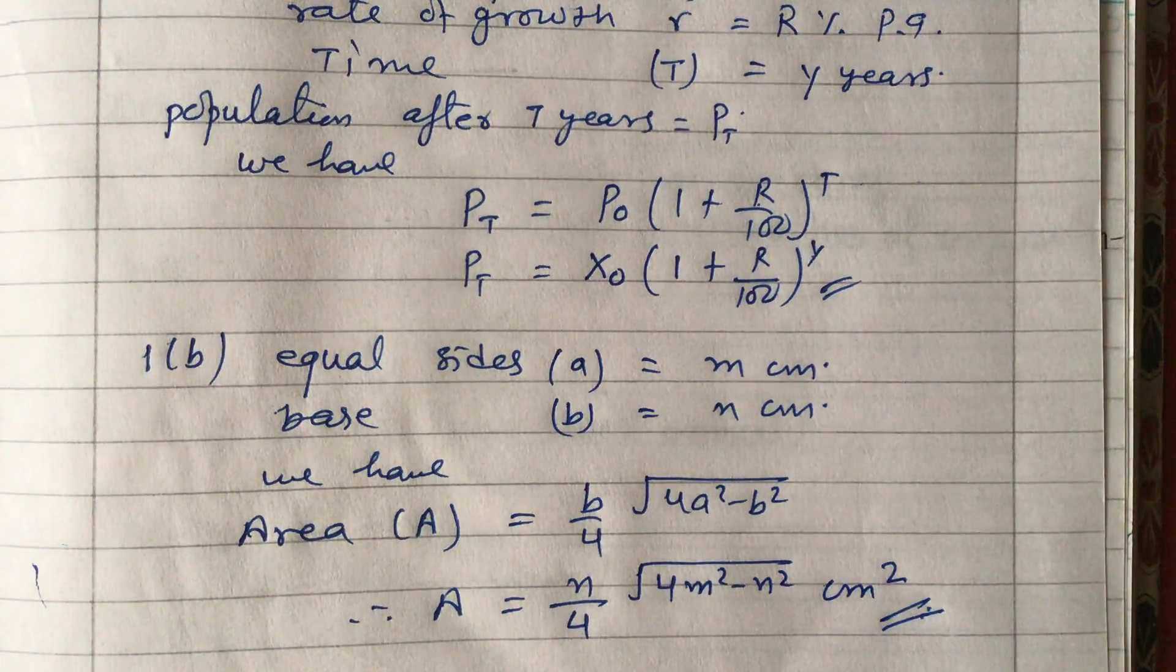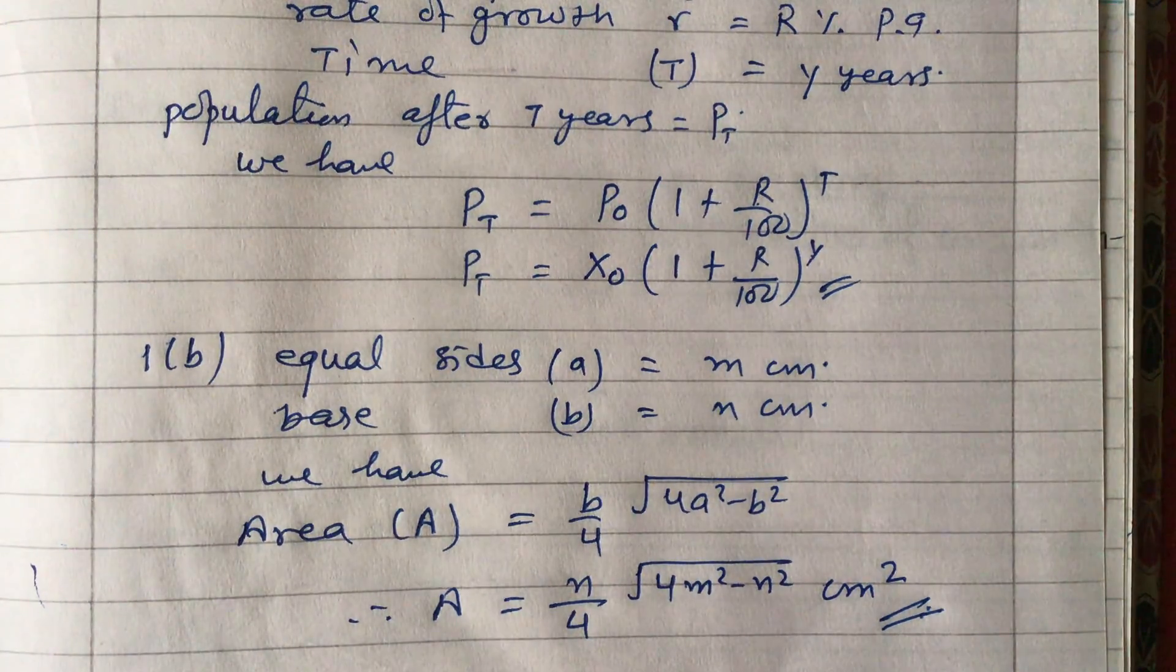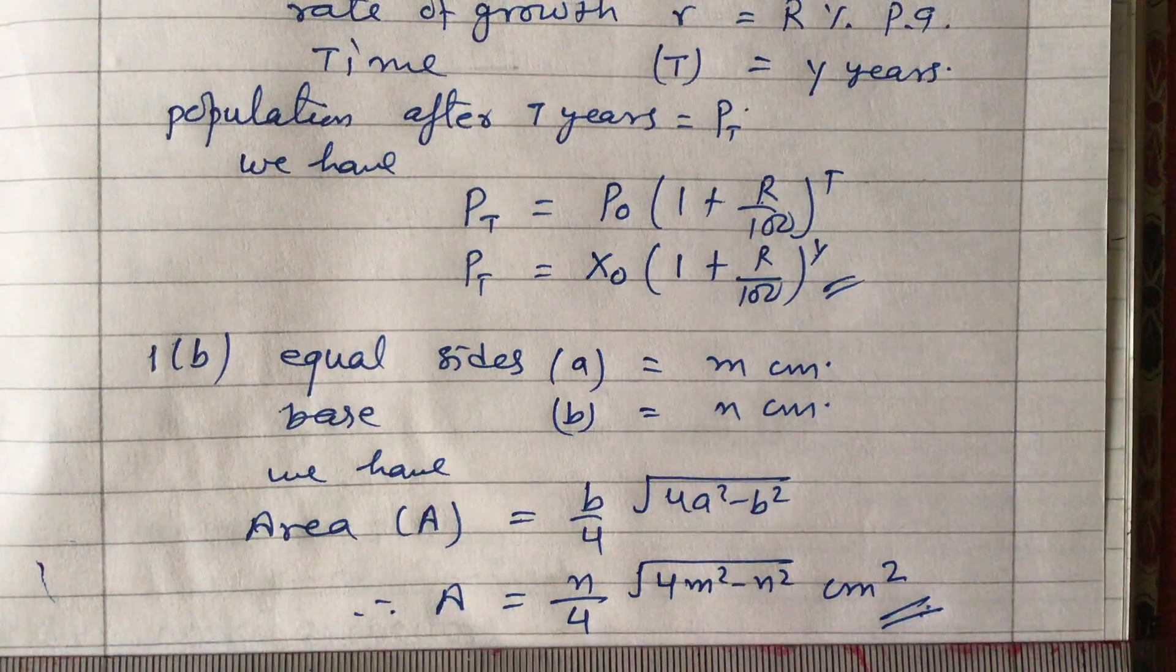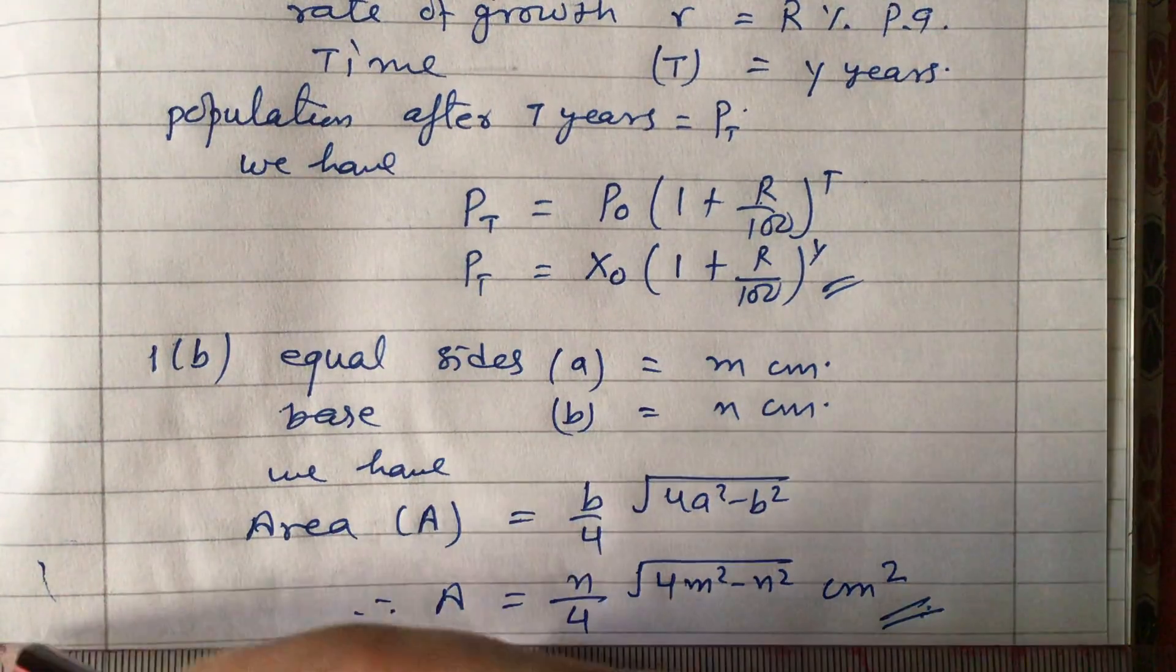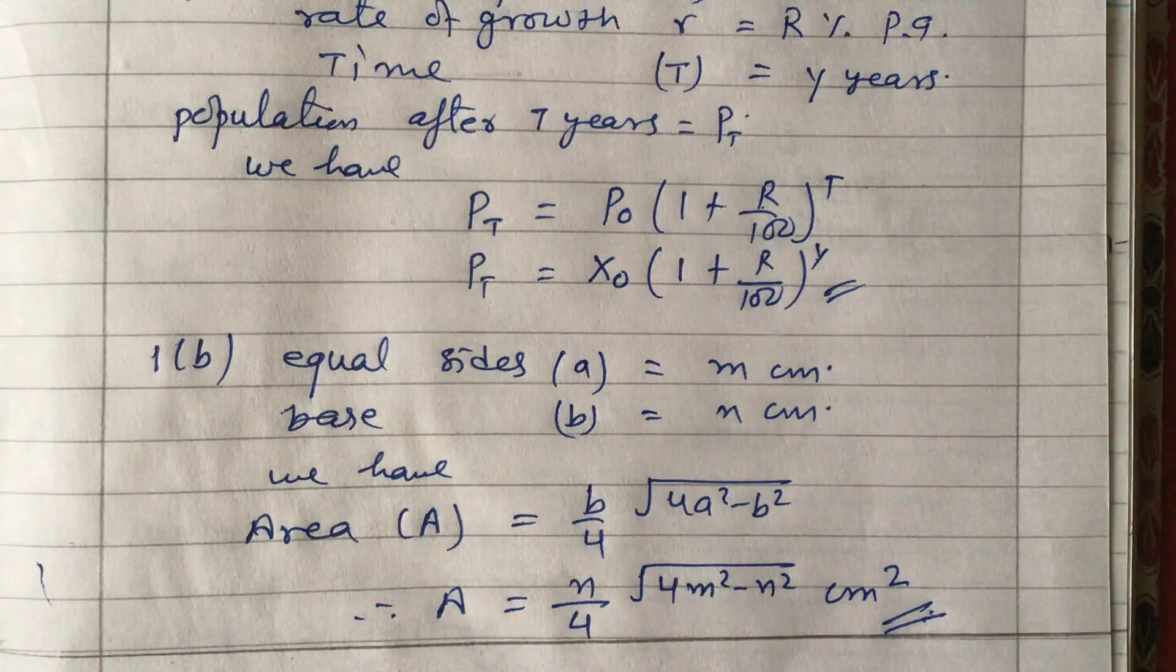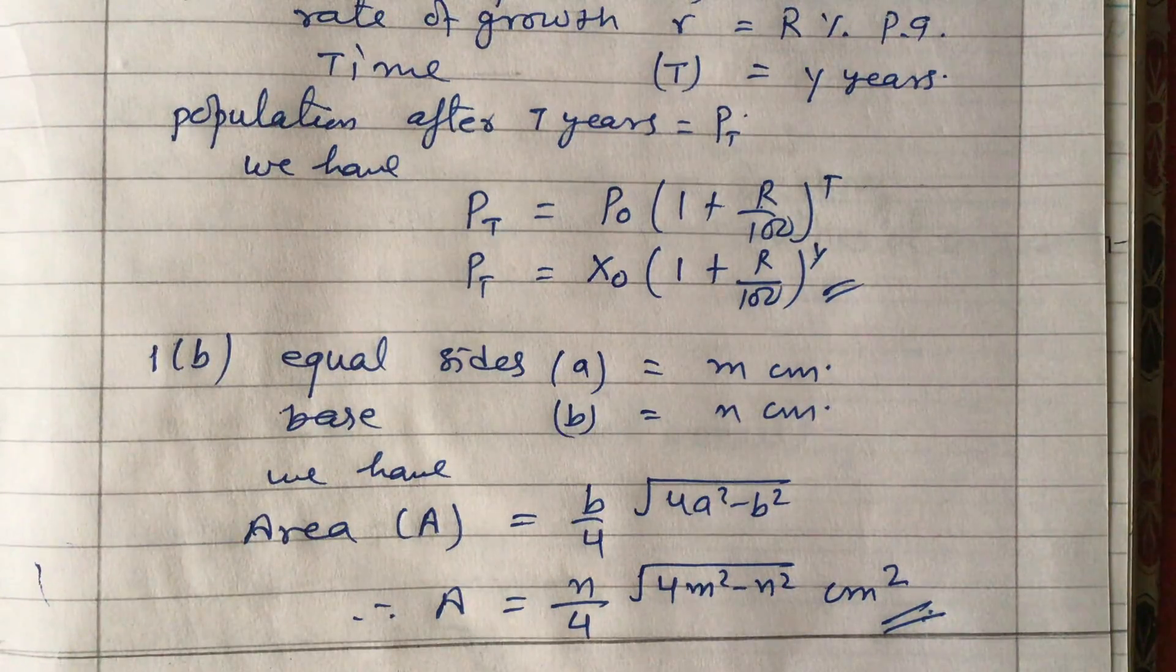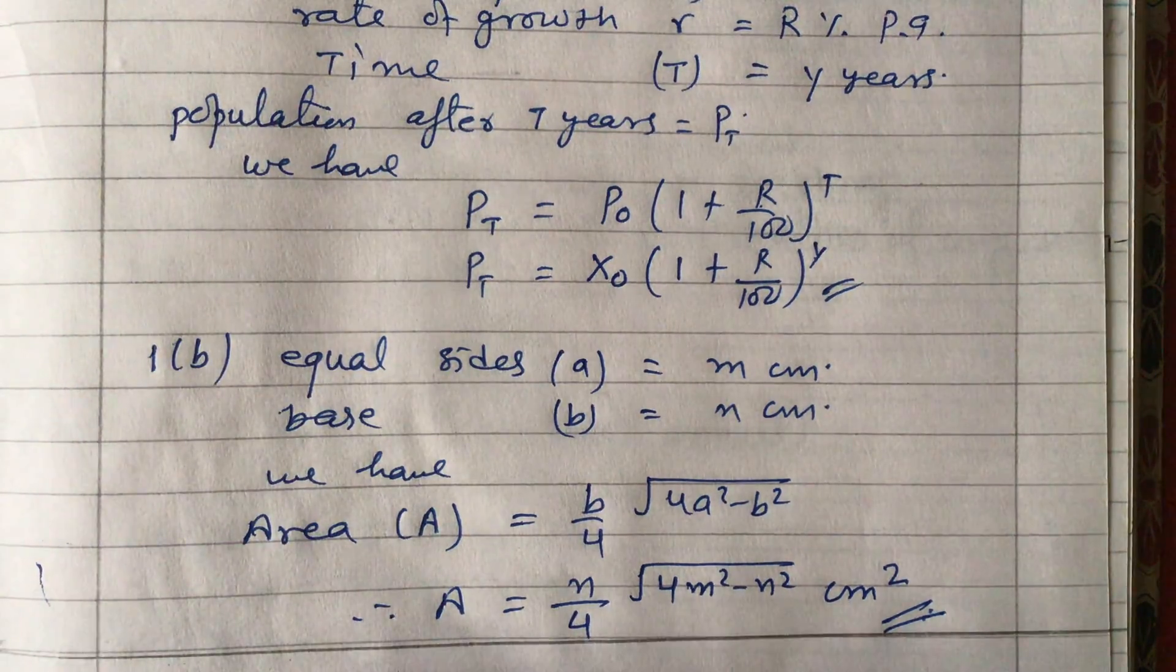After finishing question number one, draw a line. In the SE examination, you can draw a line like this. When one answer is finished, draw the line, then start another.